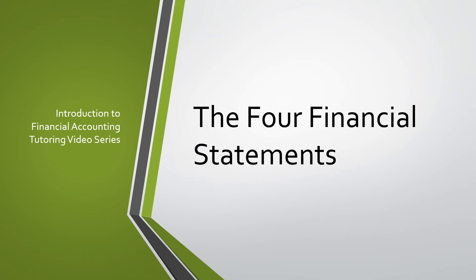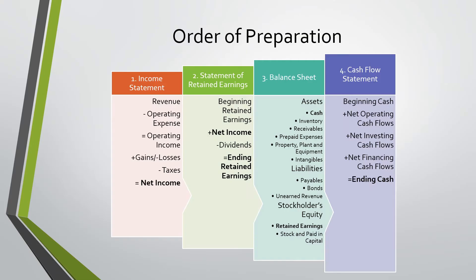Today we will be going over the four financial statements. The order of preparation: first is the income statement. This is revenue minus operating expenses, which equals operating income. We then add and subtract losses and taxes and arrive at net income.